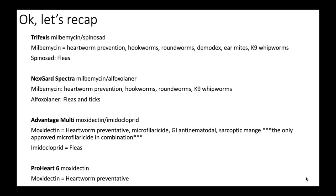Trifexis is milbemycin and spinosad: milbemycin provides heartworm prevention, hookworms, roundworms, demodex, ear mites, and canine whipworms; spinosad gets fleas. NexGard Spectra — distinct from plain NexGard — contains milbemycin and afoxolaner: milbemycin provides heartworm prevention, hookworms, roundworms, and canine whipworms; afoxolaner gets fleas and ticks. Advantage Multi is moxidectin and imidacloprid: moxidectin provides heartworm prevention, microfilaricide activity, gastrointestinal antinematodal coverage, sarcoptic mange, and is the only approved microfilaricide in combination; imidacloprid gets fleas. ProHeart 6 is moxidectin for heartworm prevention.